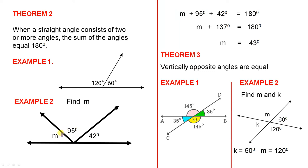Here is another example, for example 2, where we have three angles. So the straight angle consists of three angles, an unknown angle and two others. Because of the theorem, we can form this equation. So M plus 95 degrees plus 42 degrees equals 180 degrees. So M plus 137 degrees equals 180 degrees, so M must be 43 degrees.